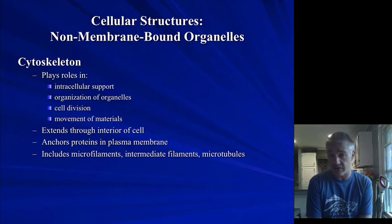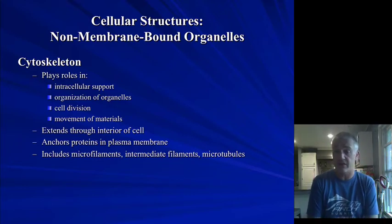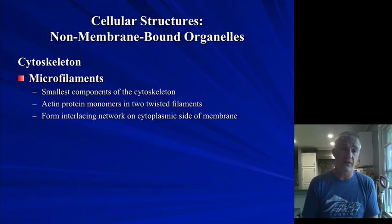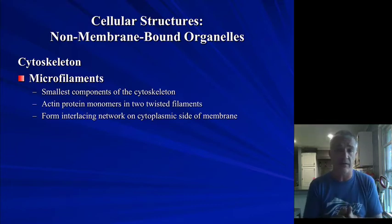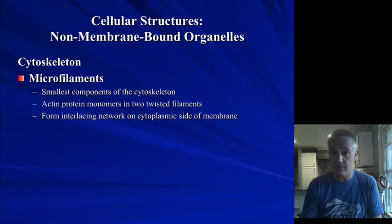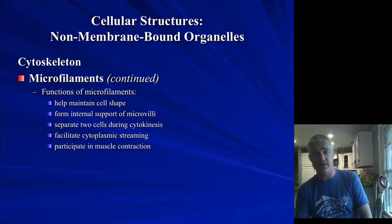There are a number of different structures here. We have microfilaments, intermediate filaments, and microtubules. The microfilaments are the smallest ones. We'll talk about the protein actin a little bit later on, but they're made up of actin polymers that are twisted around one another. They're found throughout the cytoplasmic side of the membrane and help to hold the cell shape.